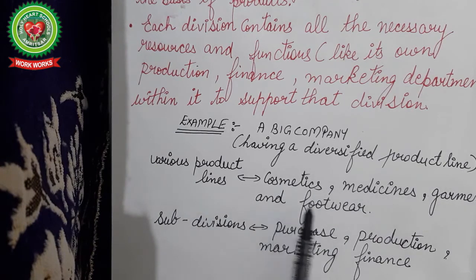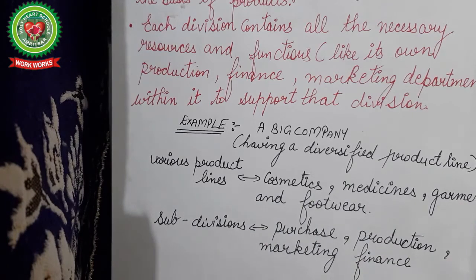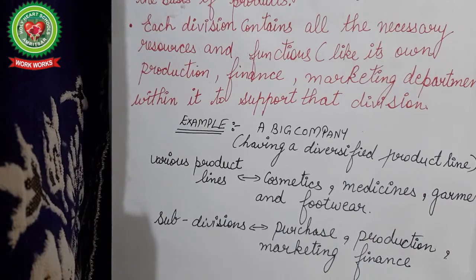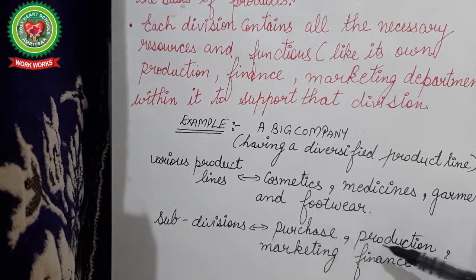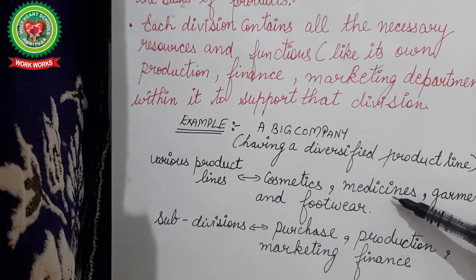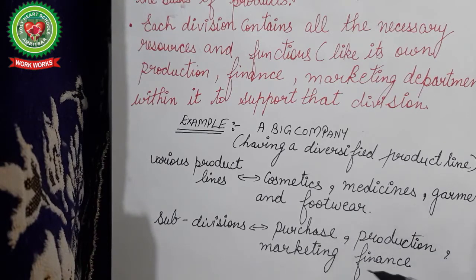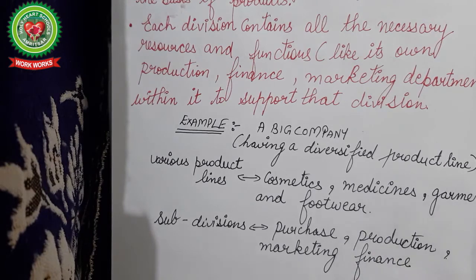For example, a big company having a diversified product line — say cosmetics, medicines, garments, footwear — is dealing with these kinds of products. Under cosmetics it will have purchase, production, marketing, and finance. The same applies to the medicine division, and also in the case of garments and footwear.